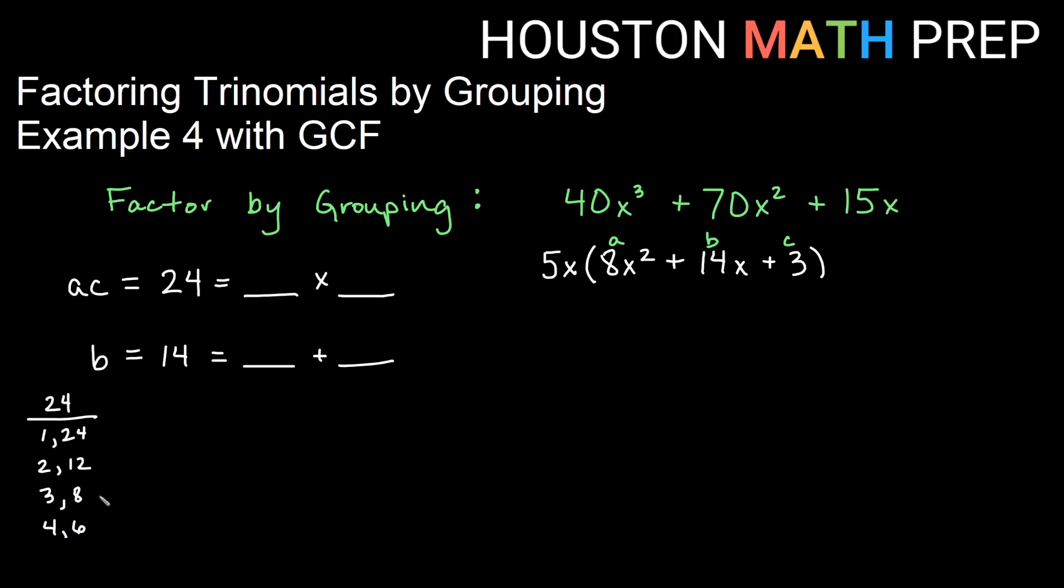Once I start trying to write any other pairs of factors, I will see that I just get the same pairs, but in reverse order, 6 times 4, 8 times 3, etc.